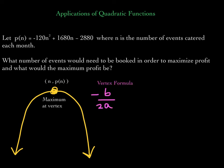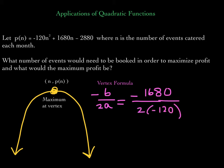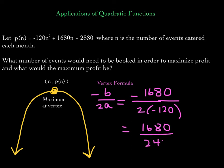Recall that the vertex formula is negative b over 2a. So in this case it will be negative 1680 over 2 times a, which is negative 120 — the leading coefficient. B is 1680, the coefficient of the first degree term. Negative 2880 is c. So negative b over 2a is negative 1680 over 2 times negative 120. This simplifies to a positive number — negative divided by negative is positive — giving us 1680 divided by 240, which equals 7.